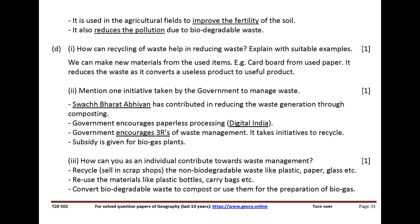How can recycling of waste help in reducing waste? Explain with suitable examples. We can make new materials from used items. E.g., cardboard from used paper. It reduces waste by converting a useless product into a useful product. Mention one initiative taken by the government to manage waste. Swachh Bharat Abhiyan has contributed to reducing waste generation through composting. Government encourages paperless processing and the 3Rs of waste management. It takes initiatives to recycle. Subsidy is given for biogas plants.